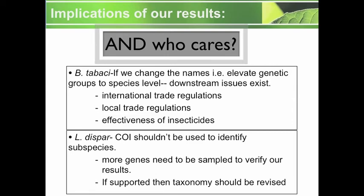So what are the implications of our results? This answers the who-cares part. For Bemisia tabaci, if we were to change the names and elevate all the genetic groups to species level — including the new ones described here — there would be downstream issues including international and local trade regulations, because the new species names would have to be incorporated into those documents. Additionally, chemical companies would have to test their insecticide against each described species.